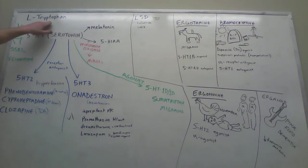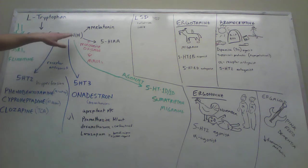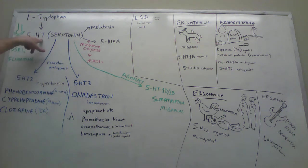The precursor to serotonin is L-tryptophan. L-tryptophan breaks down to become 5-HT, known as serotonin. We're going to talk about these 5-HT receptors quite a bit, so every time 5-HT is referring to serotonin.